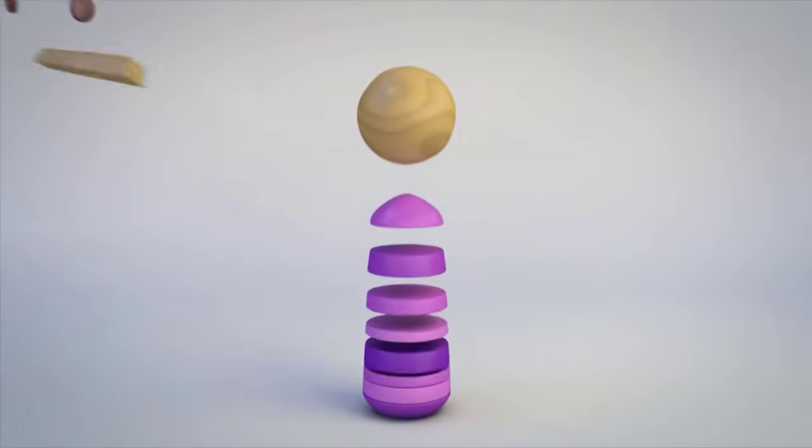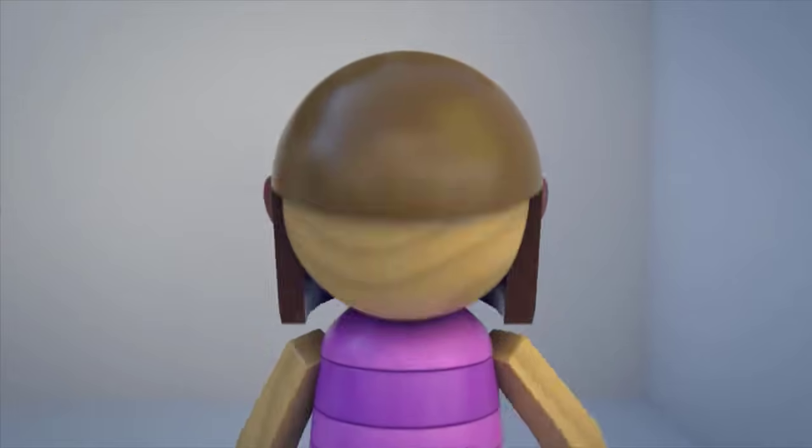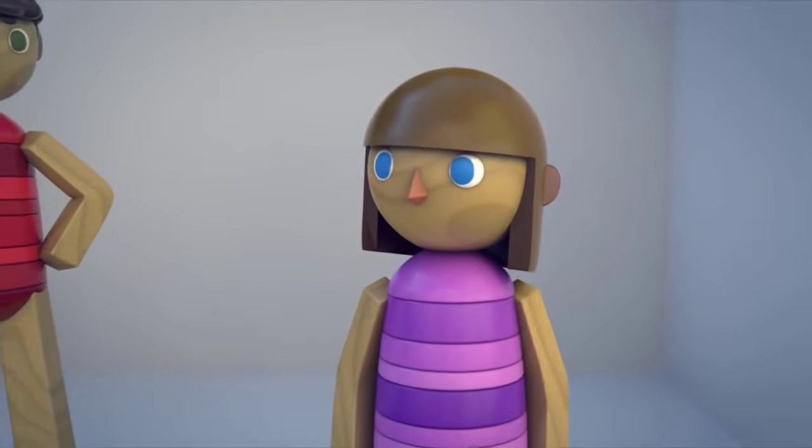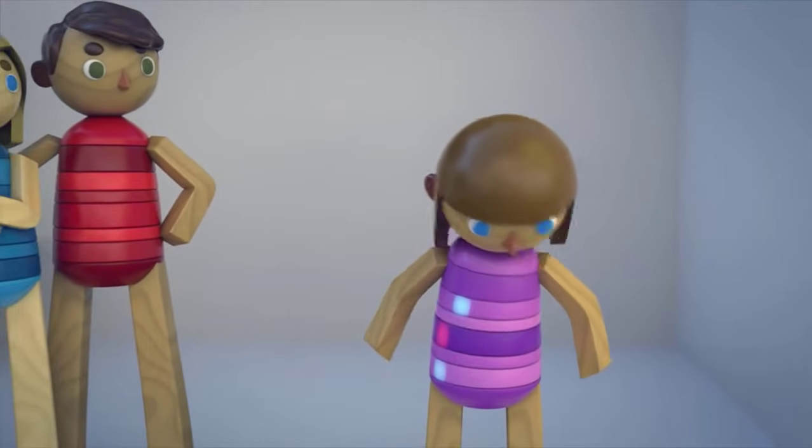Some traits are inherited, and some are shaped by the environment. Eye color and nose shape are inherited traits. They are controlled by genes, which we inherit from our parents.